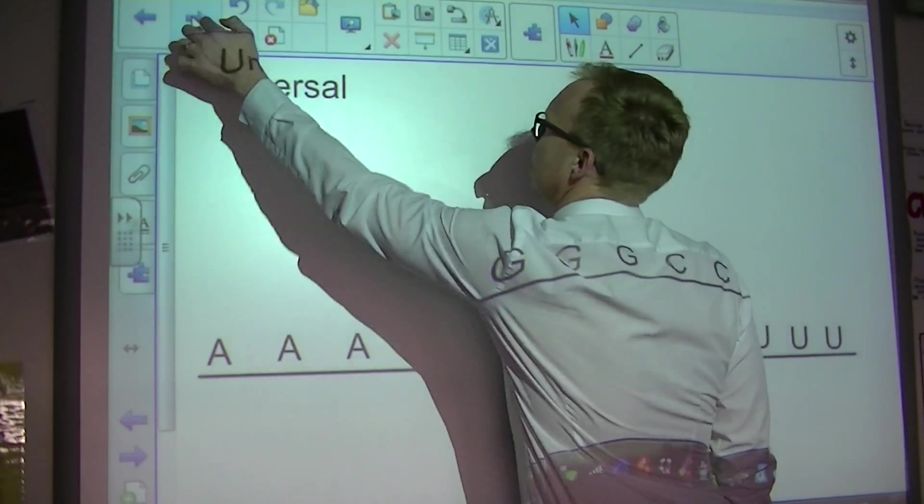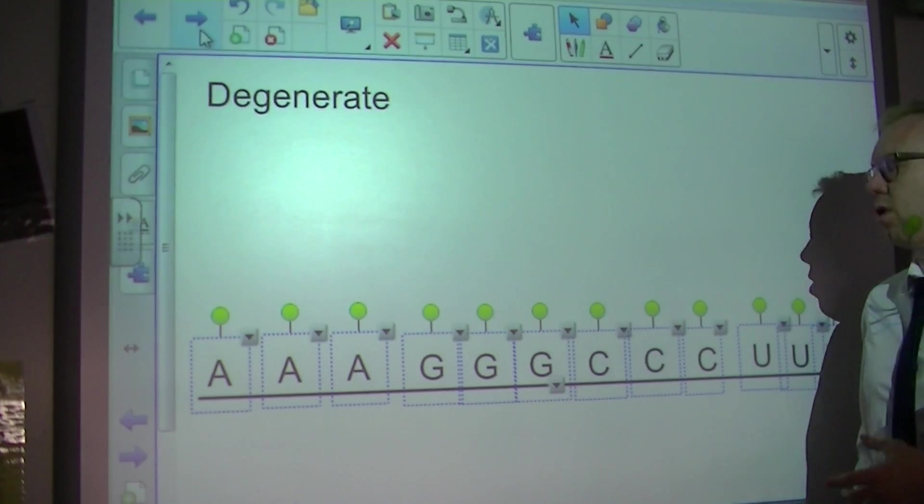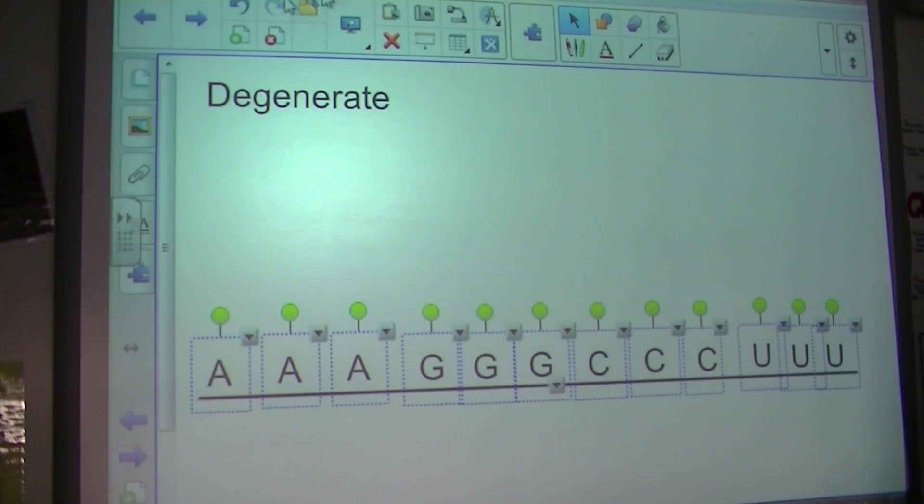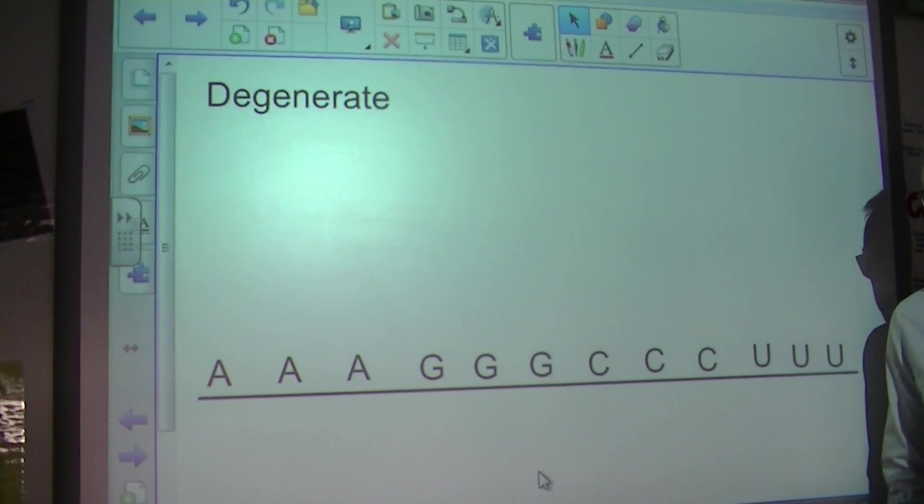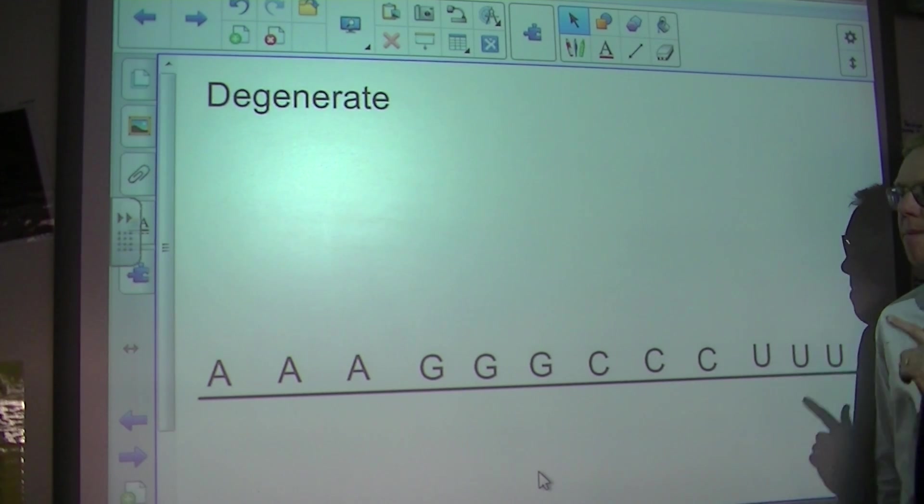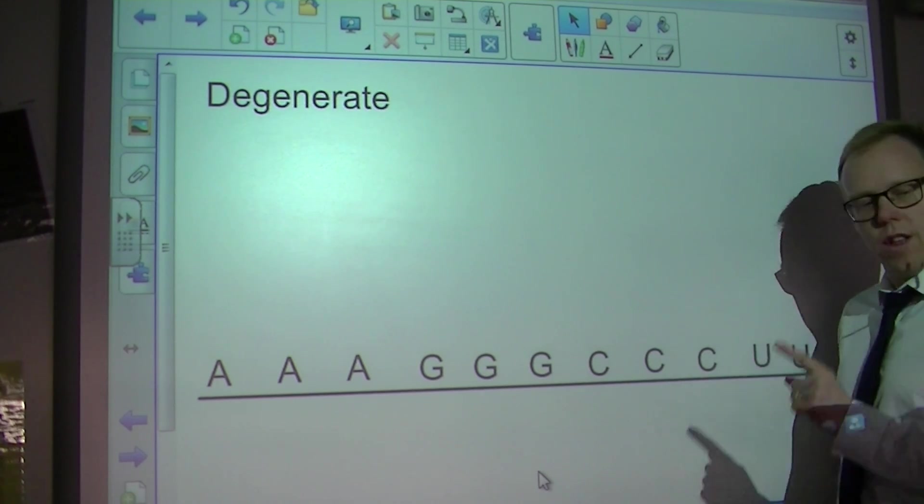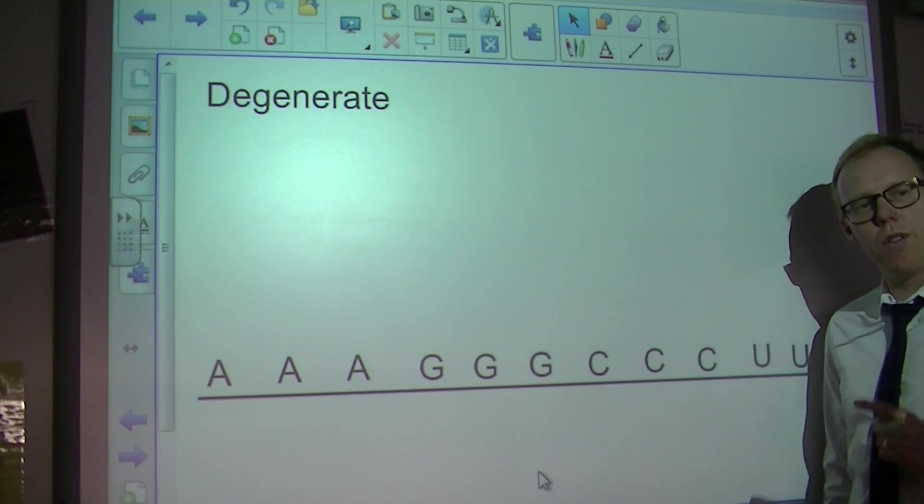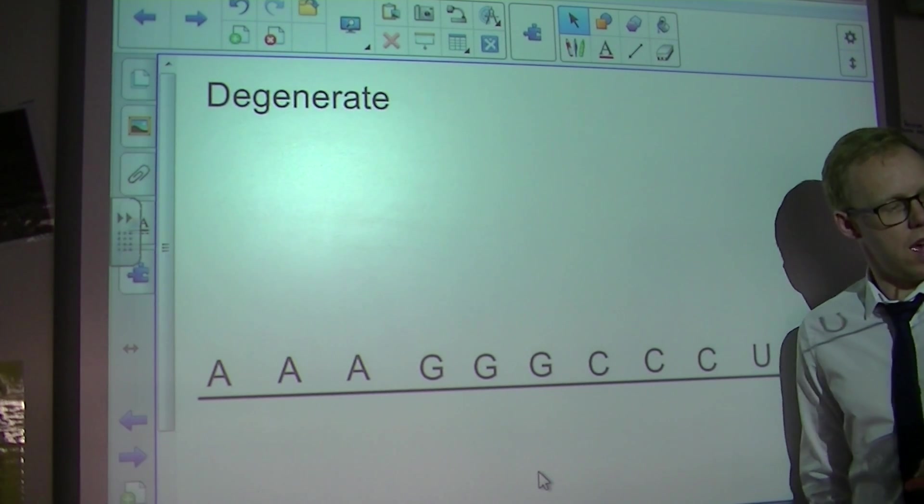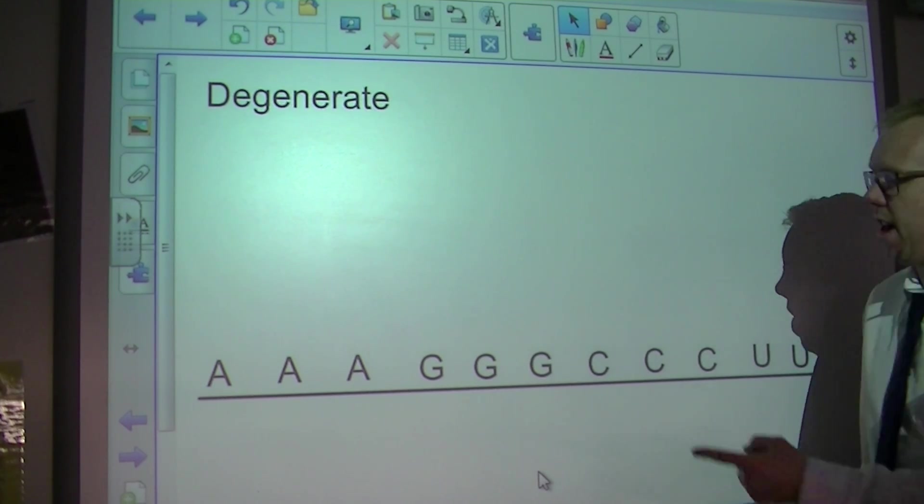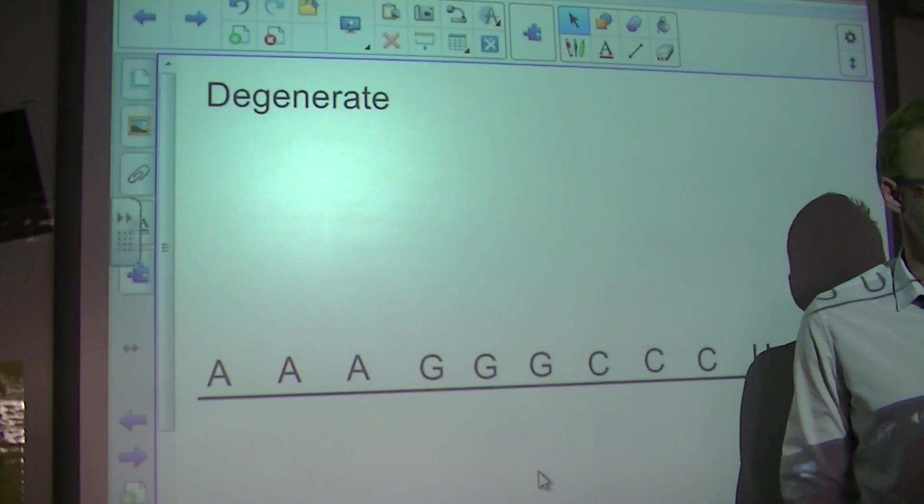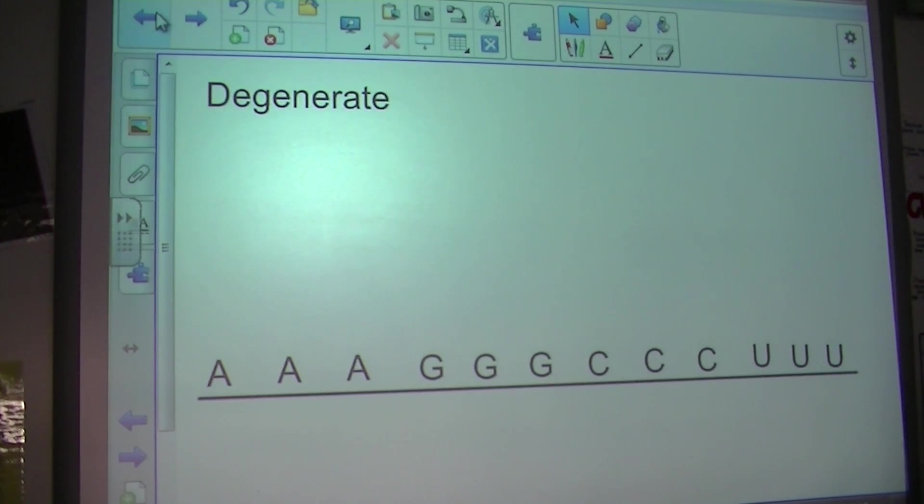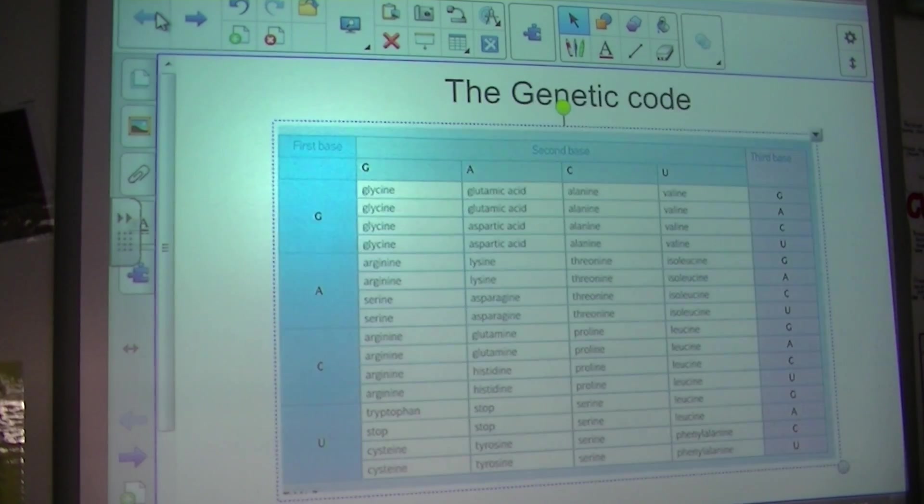And finally, and this is the one the examiner comes up with the most. So this is the one that the examiner likes the most. What does it mean by the genetic code being degenerate? It means quite simply that certain amino acids have more than one triplet code. We've just said there that A, A, A codes for lysine. But if I go back to our original table here...